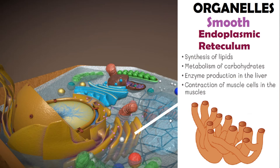Other functions of the smooth endoplasmic reticulum include metabolism of carbohydrates, enzyme production in the liver, and the construction of muscle cells into muscles.